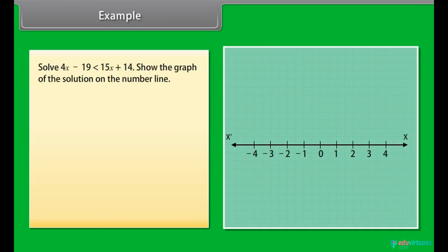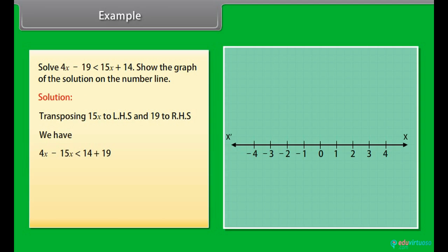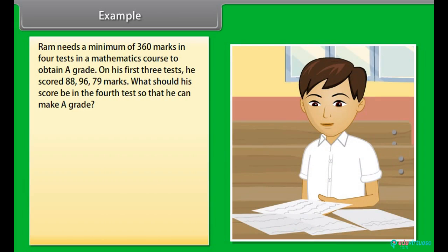Example: Solve 4x − 19 less than 15x plus 14. Show the graph of the solution on the number line. Solution: Transposing 15x to LHS and 19 to RHS, we have 4x − 15x less than 14 plus 19, or −11x less than 33, or −x less than 3, so x greater than −3. This inequality is shown on a number line with an open circle at −3 and an arrow to the right, because we want values greater than −3.